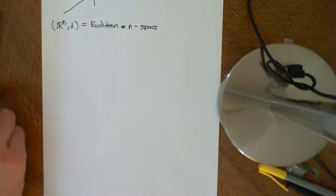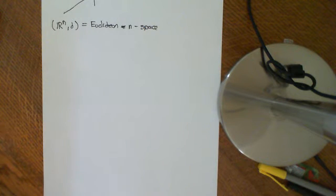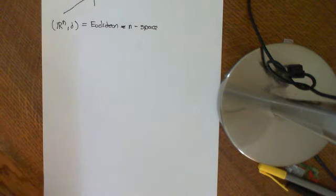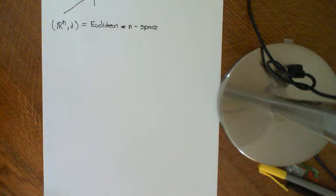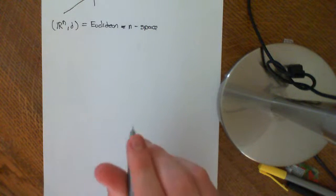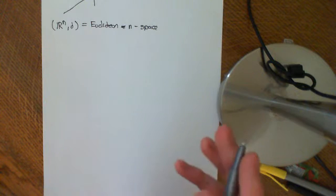We've now looked at the metrical structure of Euclidean spaces — the real line, R², R³, and Rn. Those are the foundations of Euclidean geometry. But now we're going to look at some slightly more abstract metric spaces. We're not in the realm of abstract nonsense yet, but we're going slightly more abstract.